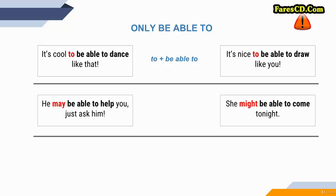Another situation: 'He may be able to help you — just ask him.' Or, 'She might be able to come tonight.' After a modal verb, you cannot use another modal verb. You can't say 'he may CAN' — you need BE ABLE TO: 'He may be able to,' 'He might be able to.'